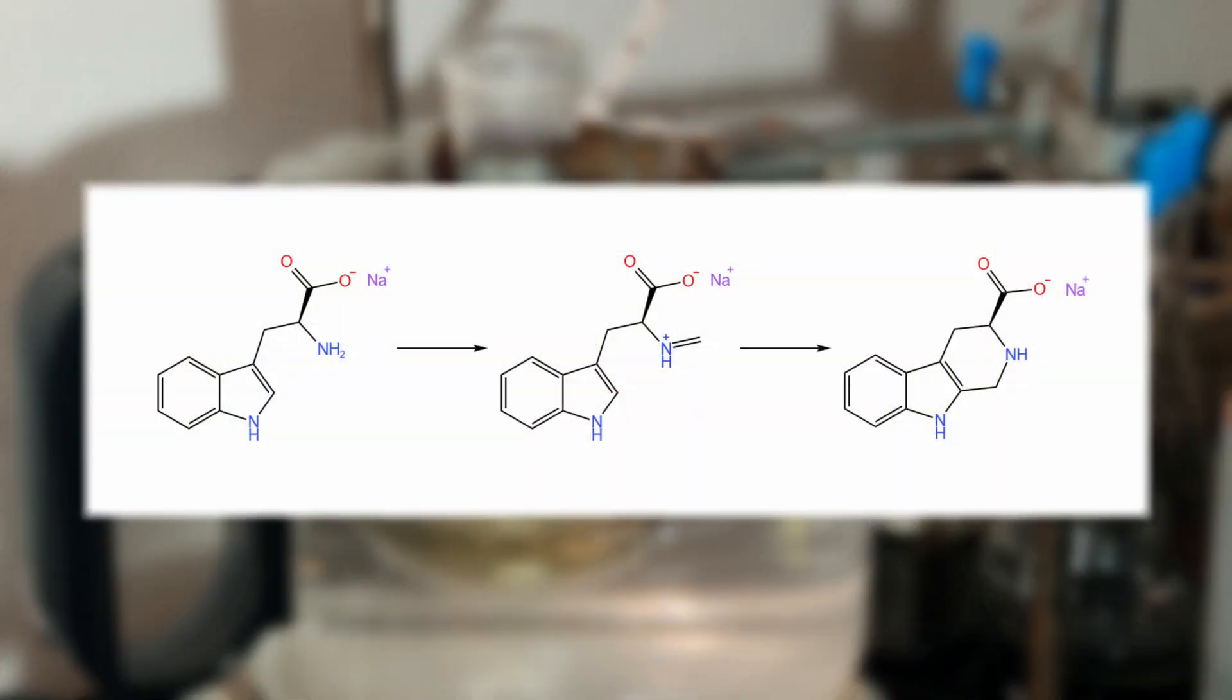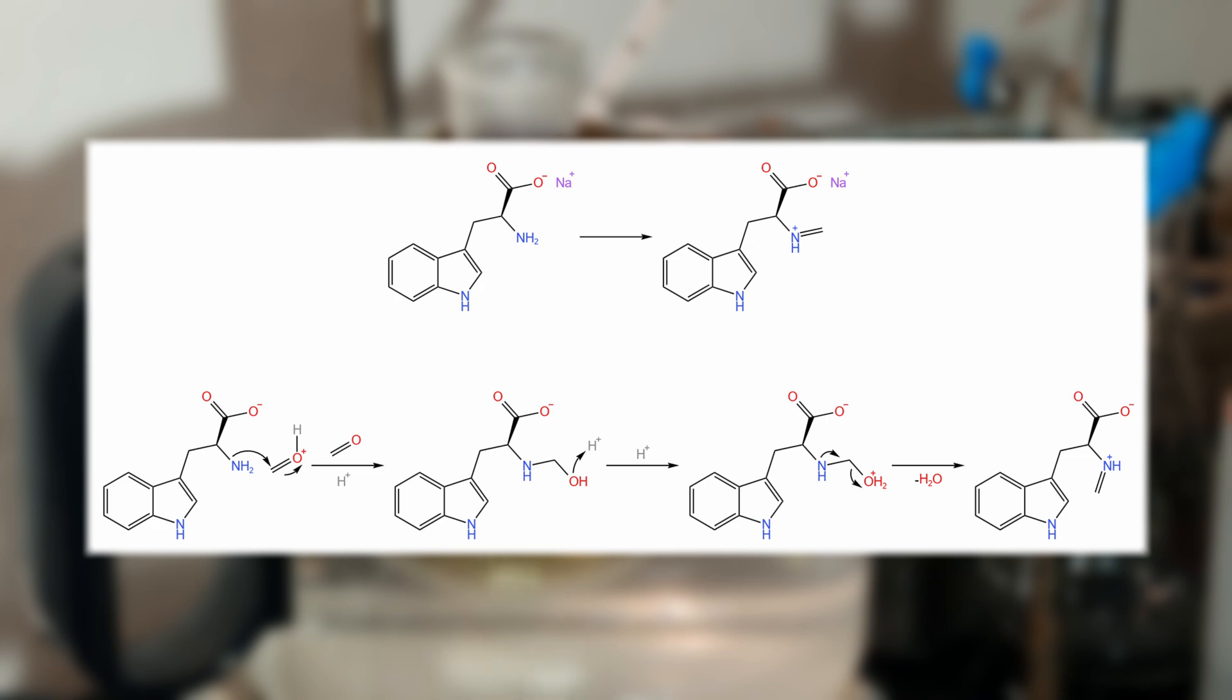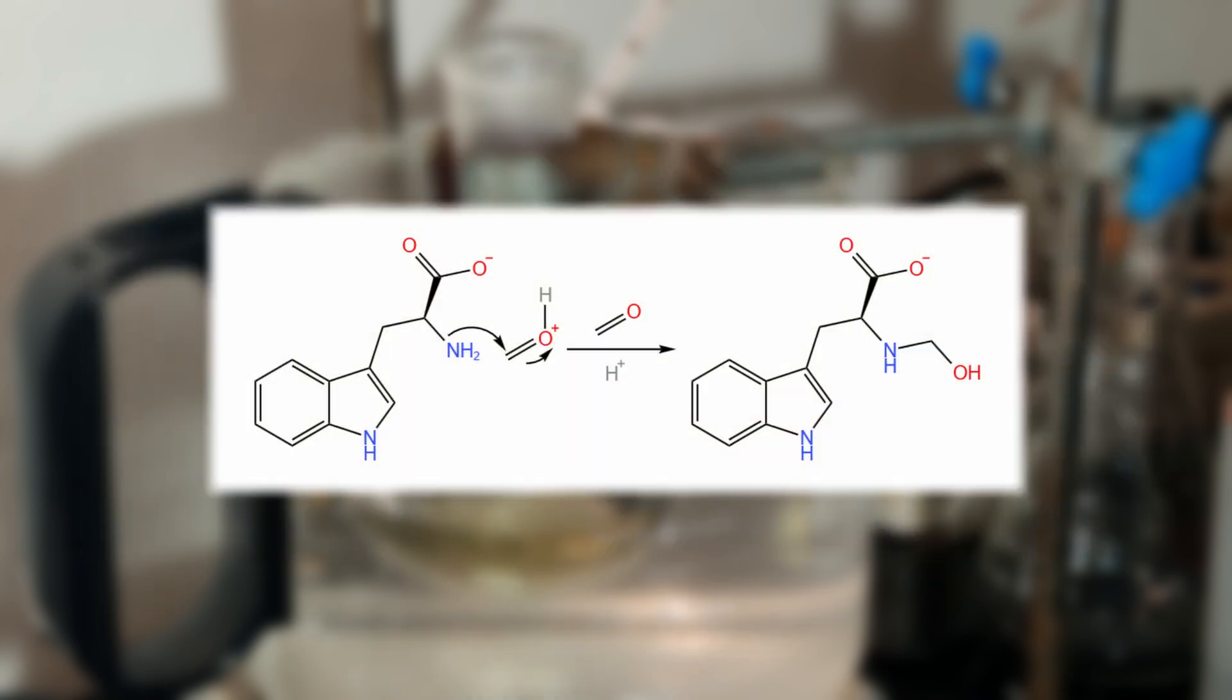The mechanism of the reaction proceeds in two major steps. In the first step of the reaction, formaldehyde condenses with the tryptophan alpha-amine. The nitrogen lone pair attacks the electrophilic carbon of formaldehyde activated by protonation of the formaldehyde oxygen.